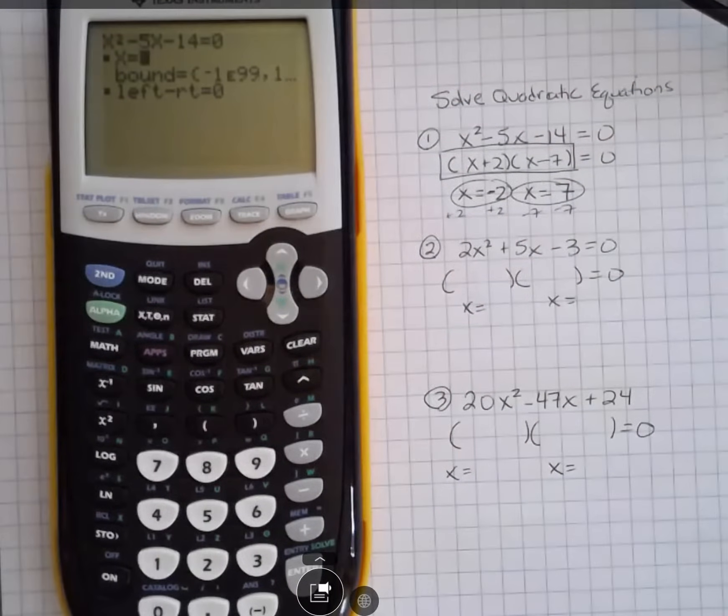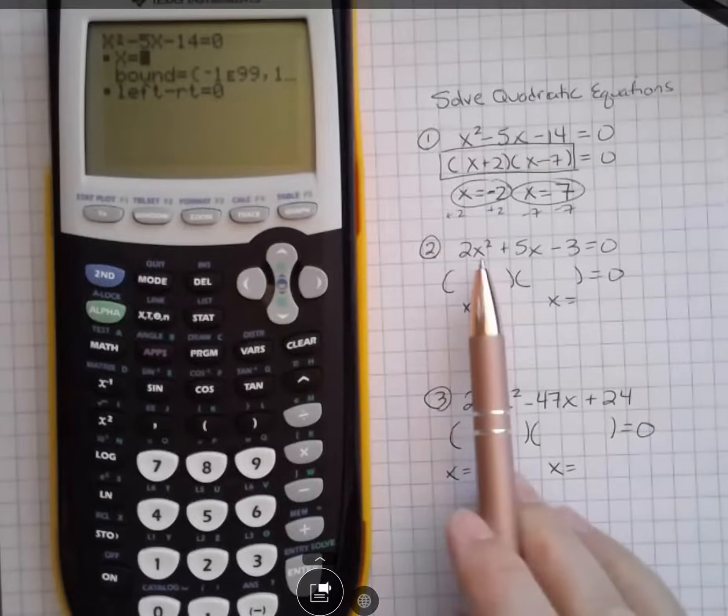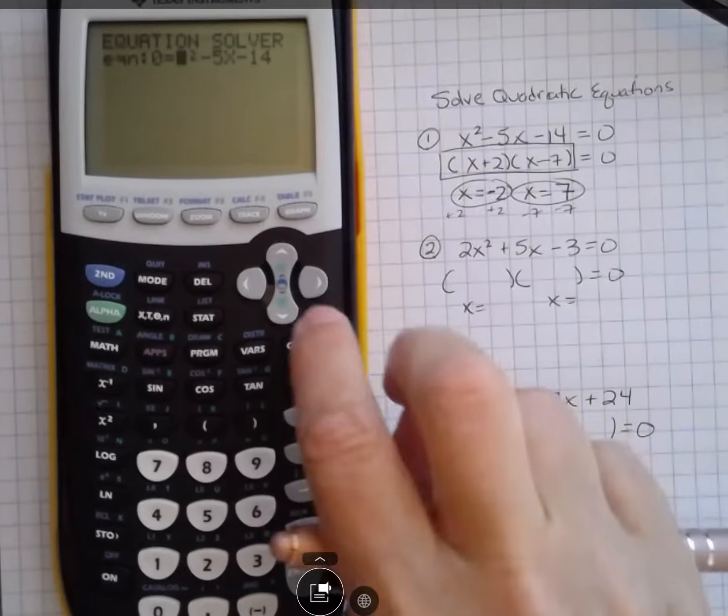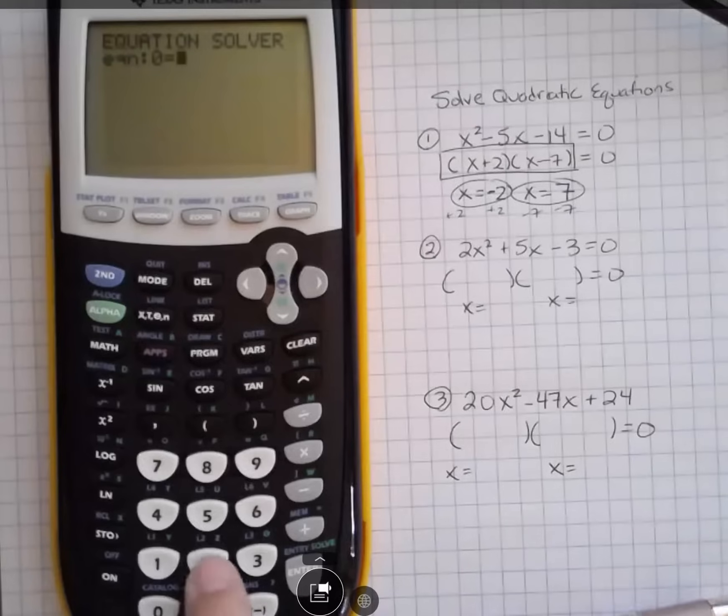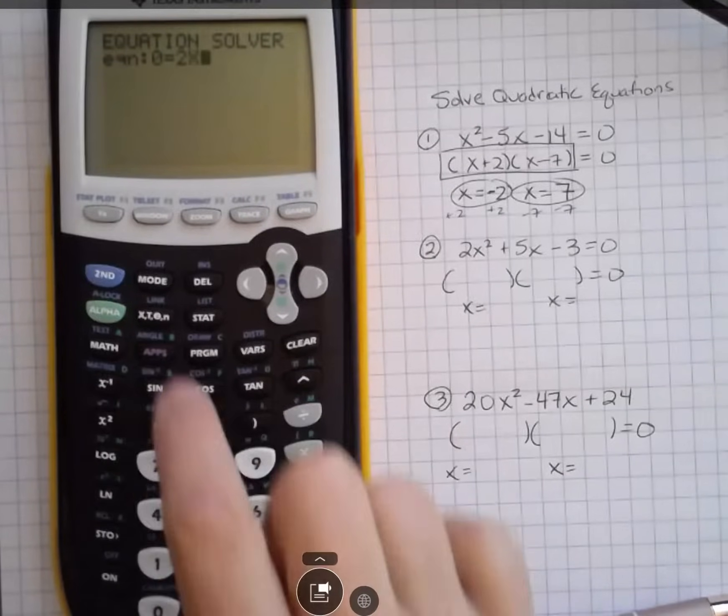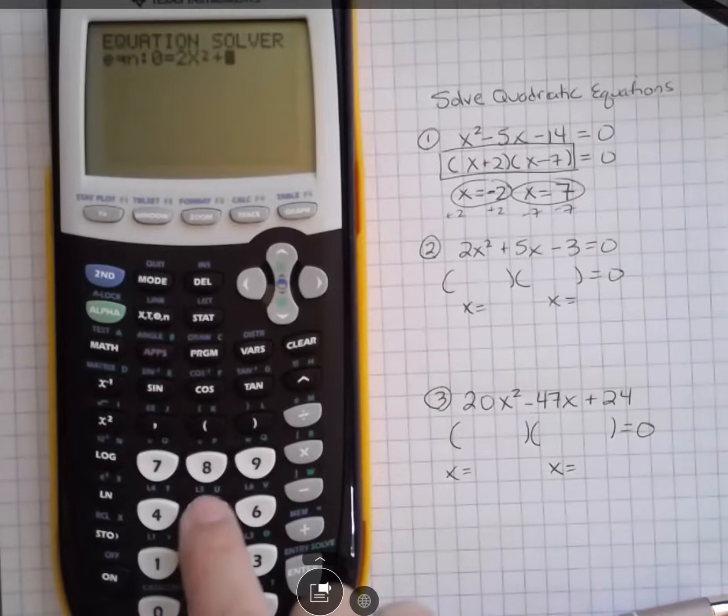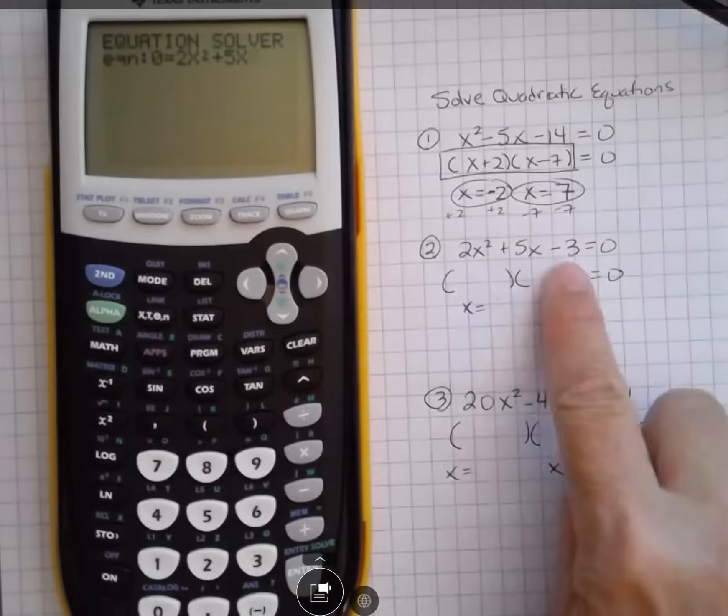Alright, so you get the solutions, but you can work backwards to get that answer. The second one I'm going to do, I'm going to clear that and do 2x squared plus 5x minus 3.